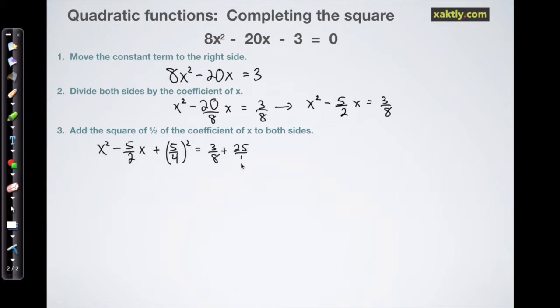Now while I'm here I'm just going to change that 3/8 into sixteenths, so that's going to be 6/16. So that 3/8 turns into 6/16, then I can just add those two fractions with a common denominator: 31/16. Next we can just easily identify the perfect square on the left side.